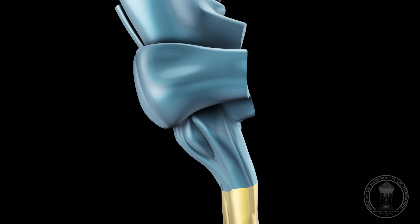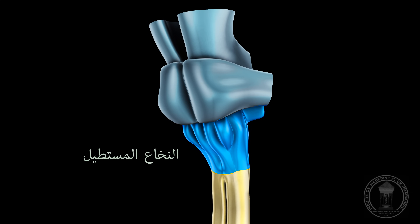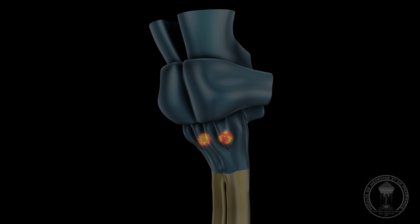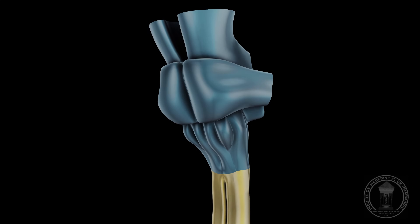النخاع المستطيل، أو ما عُرف سابقاً بالبصلة السيسائية، هو الجزء الذي يمتد بين الجسر والنخاع الشوكي. يحتوي على زوج من الأجسام الزيتونية وزوج من الأهرام في وسطه، تضم هذه الأخيرة ألياف المسالك القشرية الشوكية. يحتوي النخاع المستطيل على مراكز لا إرادية تتحكم في وظائف حيوية مثل التنفس ونبض القلب والعديد من الوظائف الانعكاسية كالقيء والسعال والعطس. وينتهي في مؤخرته السفلية بالتصالب الهرمي الذي يشكل منطقة عبور للألياف القشرية.